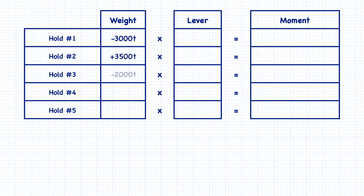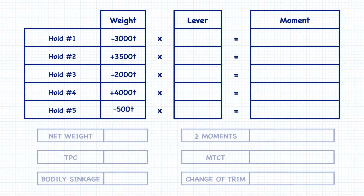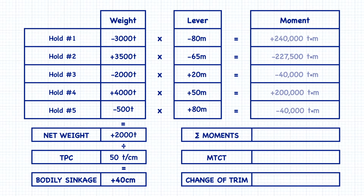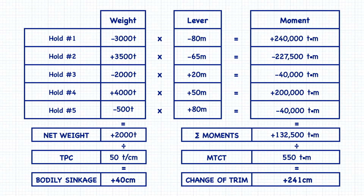If you need to load or unload multiple pieces of cargo and ballast, the calculation is done in pretty much the same order. You need to add up the weights to determine the net weight that was added or removed, use that to calculate the bodily sinkage, then calculate each of the turning moments and find the sum of the turning moments, and use that to determine the change of trim. In this way, you can make as many changes to the ballast and cargo as you want and still calculate the final result.